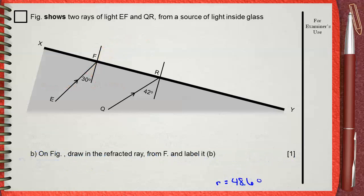Question B. On figure, draw the refracted ray from F and label it B. Remember your angle of refraction is 48.6.